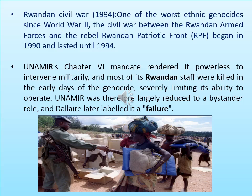UNAMIR was therefore largely reduced to a bystander role and was later labeled a failure. The United Nations found it very hard to control the genocide and protect human rights in the Rwandan civil war. Because UNAMIR staff were killed in the early days, this is why we call the Rwandan civil war an unsuccessful accomplishment of the UN peacekeeping operation.